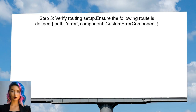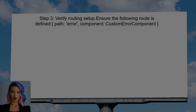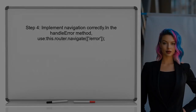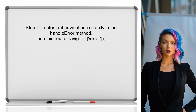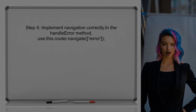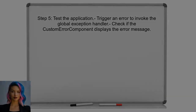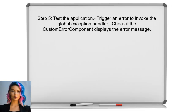The user should verify that the routing is correctly set up. The route for the error page must be defined in the approuting.module.ts file, which the user has already done. Finally, the user should ensure that the navigate method in the global exception handler is correctly implemented — using the forward slash is appropriate here. After making these changes, the user should test the application again. If everything is set up correctly, navigating to the error route should display the custom error component.